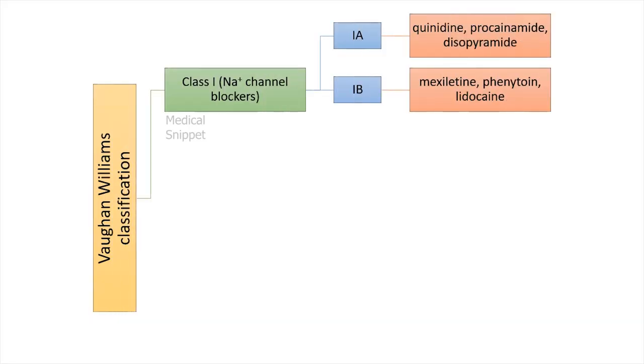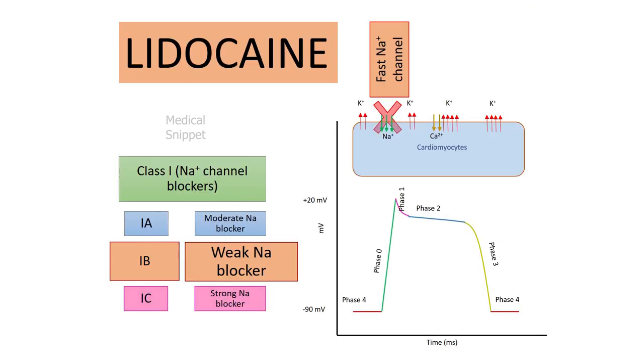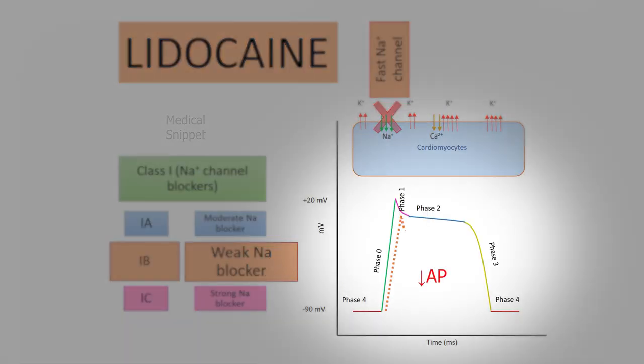Lidocaine is a class 1B antiarrhythmic agent. It is a fast sodium channel blocker. It decreases the action potential and the effective refractory period of the cardiac myocyte.